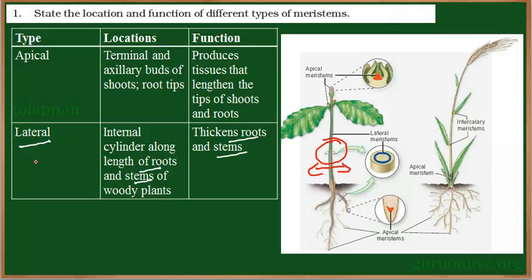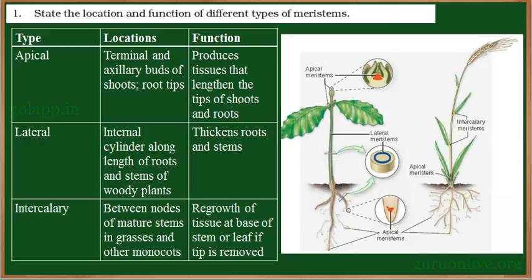This secondary growth — increasing the diameter of stem and root — is found only in dicot plants. In monocot plants like grasses, the lateral meristems are absent. So lateral meristems are found in dicot plants in the stem and root regions, and they are required for secondary growth, increasing the diameter of both stem and root.